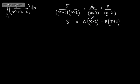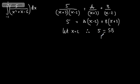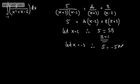Let x equal 2: the a term becomes 0, and we get 5 equals 5b, so b equals 1. Now let x equal minus 3: the b term becomes 0, and we get 5 equals minus 5a, so a equals minus 1.